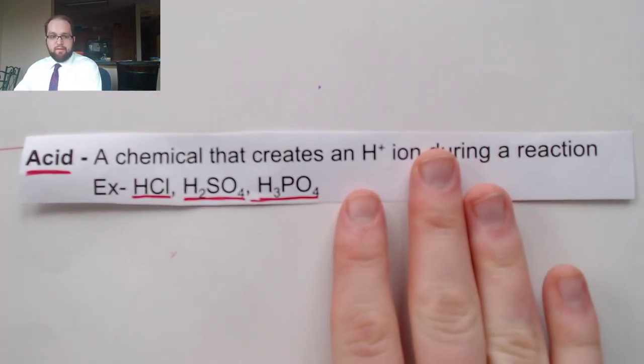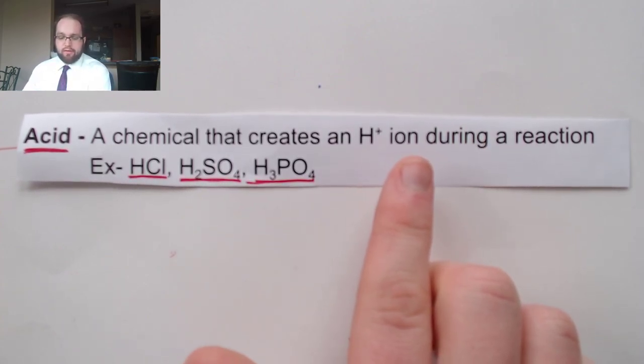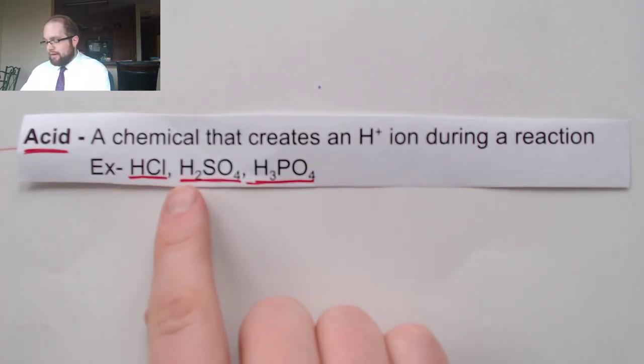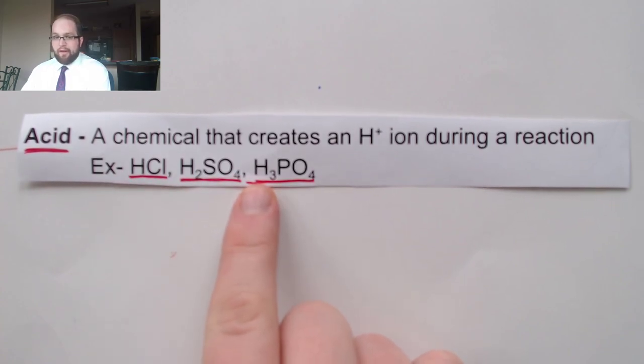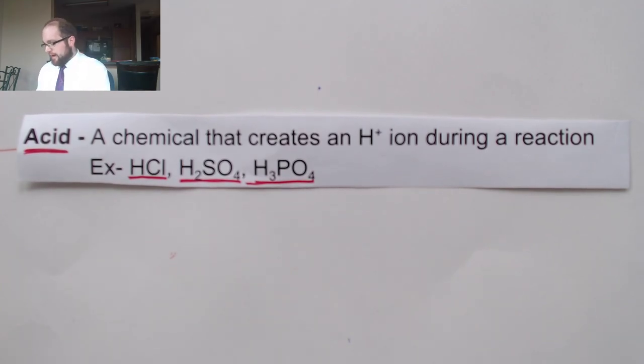Acids are very simply a chemical that creates an H+ ion during a reaction. There are lots of different types of acids and we should know already that they are distinguished very easily by having the H in the front of their formula. When you're reading out their names, this is hydrochloric acid, sulfuric acid, phosphoric acid. These all have acids in their name so they're usually really easy to pick out.